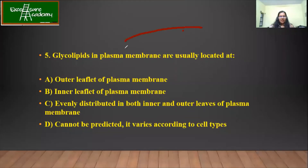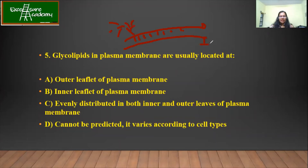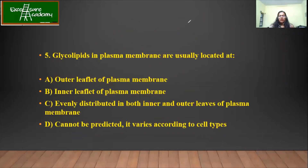This is the plasma membrane and we know that lipids are present here. Yesterday we studied that it has the glycans or sugar moiety. This has to be your outer region and inner region. So the answer is outer leaflet of the plasma membrane. If you have any doubts, please let me know. Yes, Akshita — the correct answer is A.